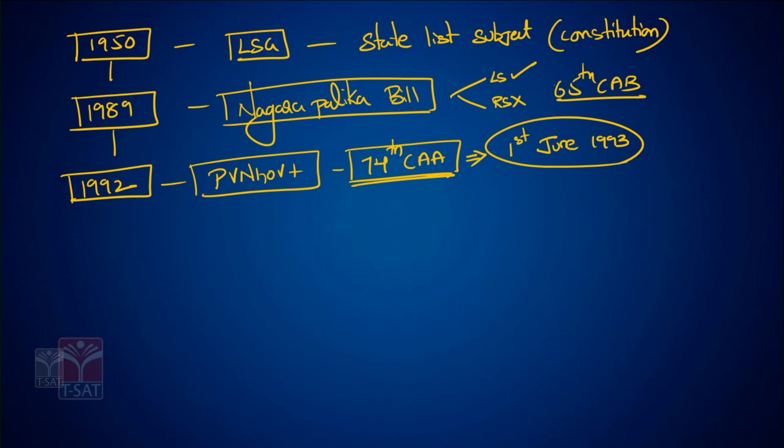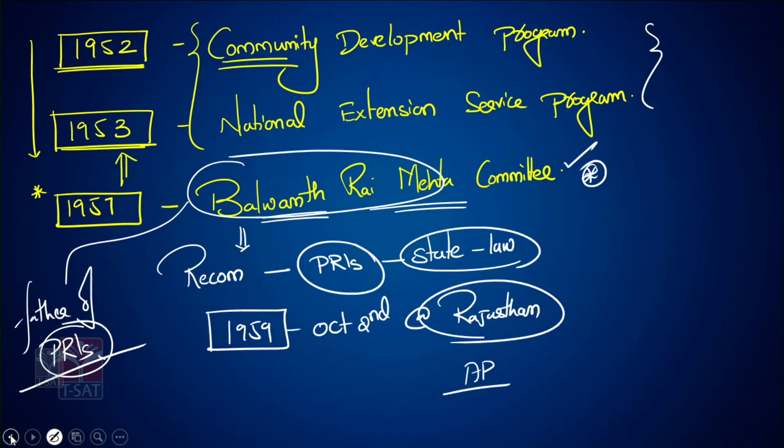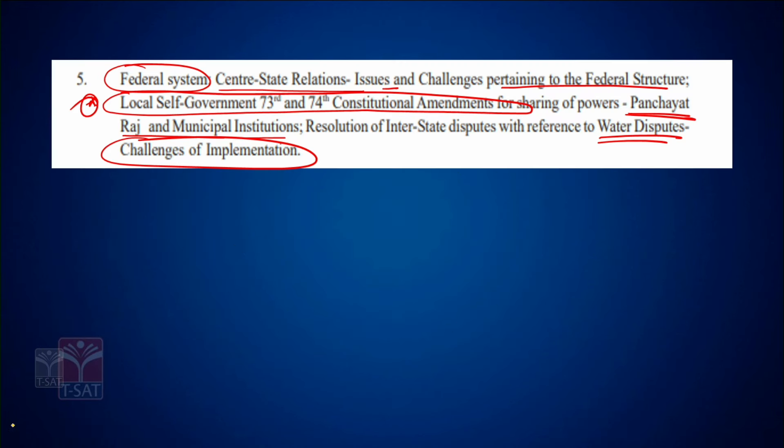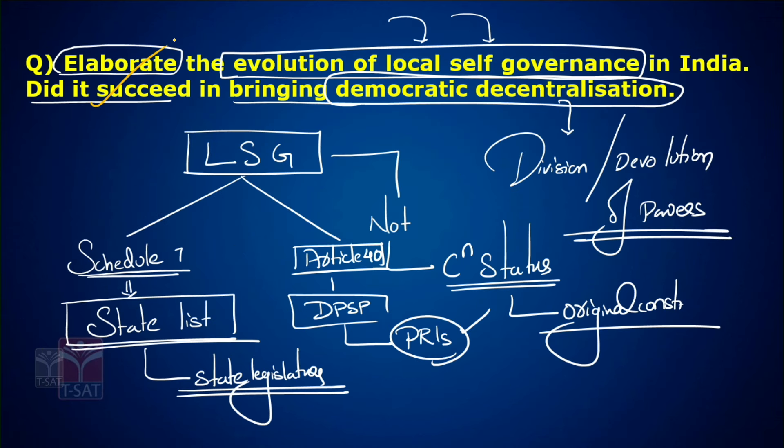This is how the municipality system evolved in India. We have different types of municipalities: municipal corporation, municipal council, port trust, cantonment boards, notified areas — all of these are called municipalities. This is the answer you need to write for this particular question.